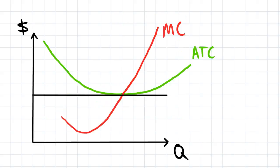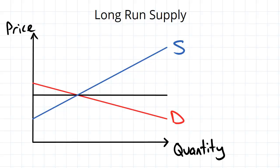as shown when the price is at the level of the minimum point on the average total cost curve. Imagine that there is then a shift to the right in the demand curve.